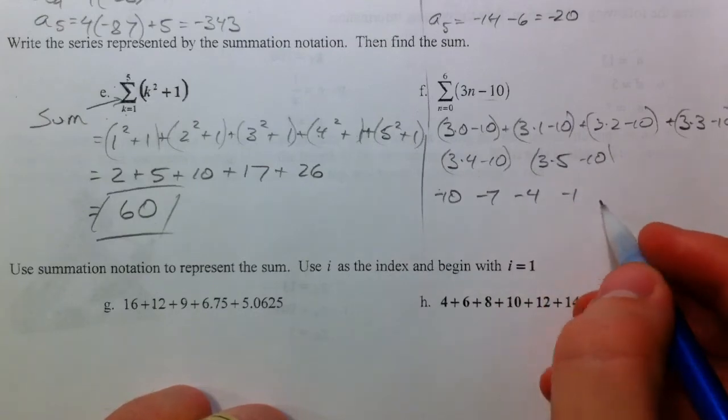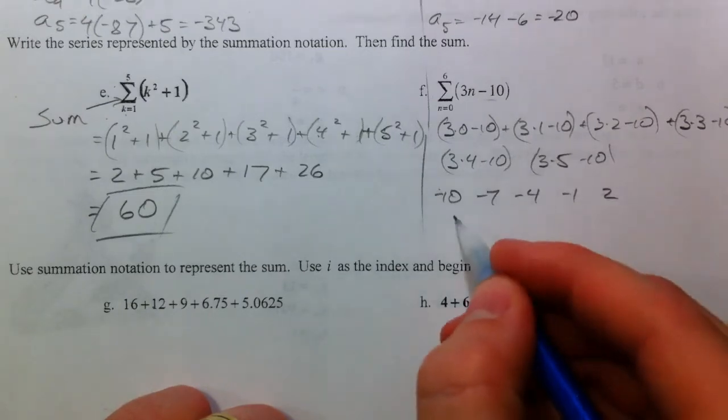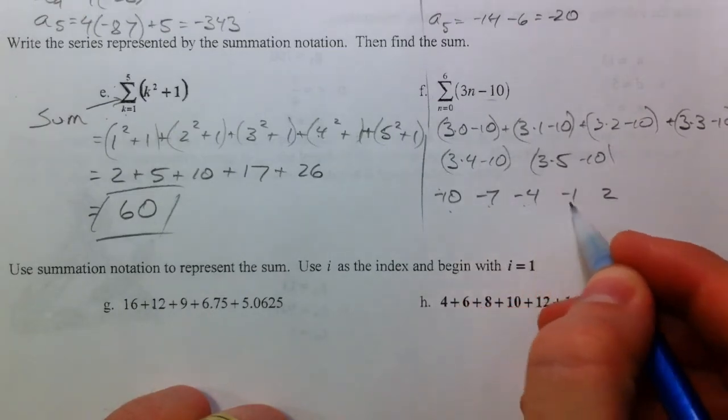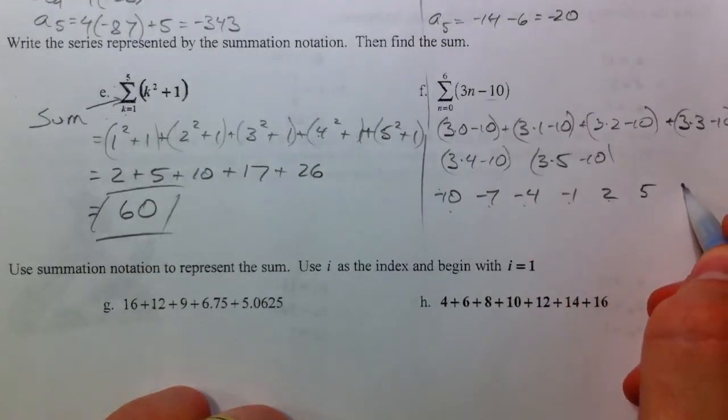negative 1, 2. So, this is 0, 1, 2, 3, 4, 5, and 6.